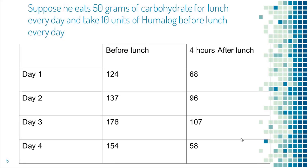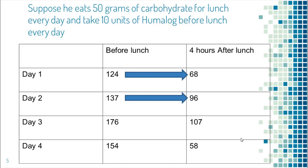Let's look at an example. This is his blood sugar log for four days — blood sugar before lunch and four hours after lunch were recorded. Suppose he eats 50 grams of carbs for lunch every day and takes 10 units of Humalog before lunch every day. Blood sugar went down from 124 to 68 over the first lunch, from 137 to 96 over the second lunch, and went down again on day three and day four. In this situation, he should take less Humalog for 50 grams of carb — maybe reduce it from 10 units to 8 units.